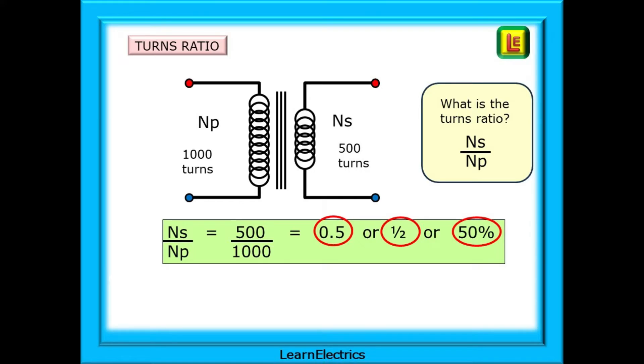In this example NS is 500 and NP is 1000. 500 divided by 1000 is 0.5 or a half, a 50% reduction between input and output.